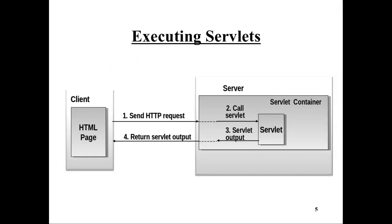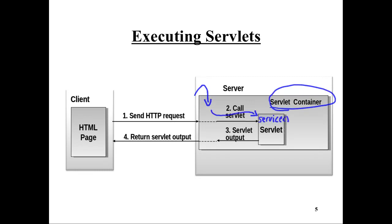This is how a servlet receives an HTTP request and generates a response. At the client there is an HTML page in the browser. The user clicks a button or a link, generating an HTTP request. The HTTP request arrives at the server, which has a TCP port where the connection is established. The server receives the HTTP request sent over TCP, and sees that the URL is mapped to a servlet. The server realizes this is a request that should arrive at the servlet container, and then calls the servlet.